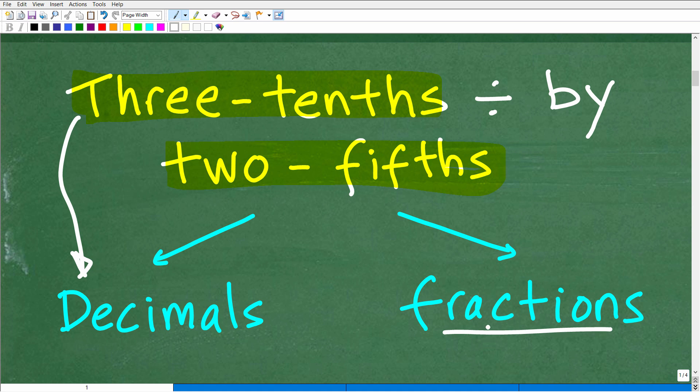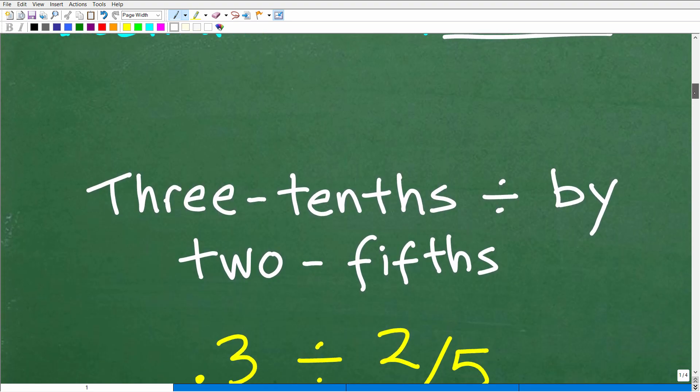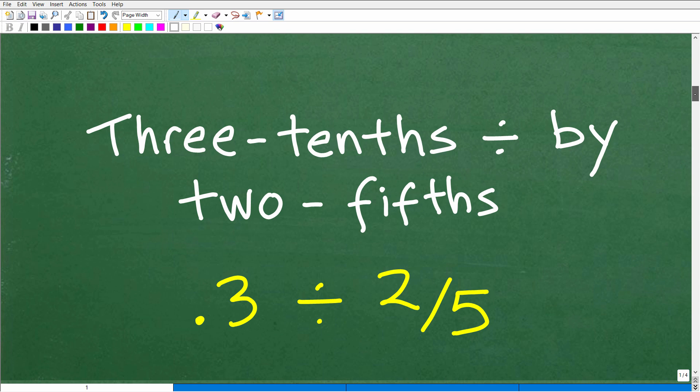Now can we convert a fraction to a decimal? Of course we could, right? So we have to make a decision on how we're going to work. So here again, we have 3 tenths divided by 2 fifths. Now let's suppose you thought of 3 tenths as a decimal, okay? Now this goes to what I was talking about earlier, place value.